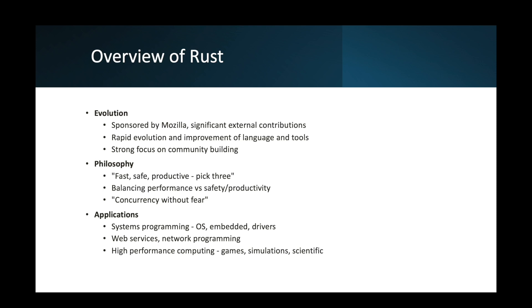Some applications include system programming — OS, embedded, and drivers — where Rust replaces C for performance-critical tasks. NASA, Microsoft, Dropbox, and Cloudflare use Rust. Also for web services and network programming with high performance and high concurrency backends, supported by frameworks like Actix and Rocket. It also has high performance computing for games, simulators, and scientific applications that often need both performance and parallelism.